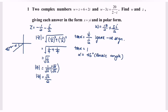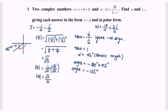Now find the argument of z. Since z is in the third quadrant, the argument of z equals negative 180 plus 45, giving negative 135 degrees. Expressing in radians, the argument of z equals negative 3π over 4.